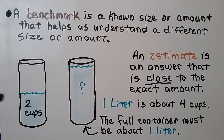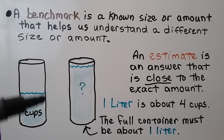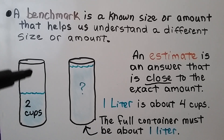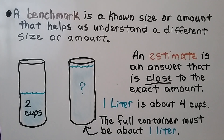And if we knew this was not two cups but a half liter, we'd say: if that's a half, we could put the other half in and that would be a full liter. So a benchmark helps us find an amount by using amounts that we already understand and know to compare.